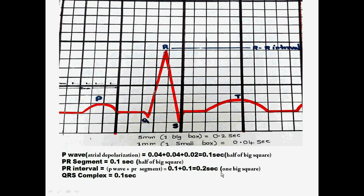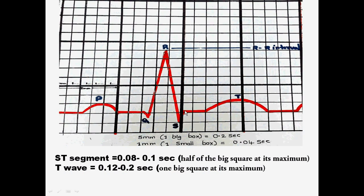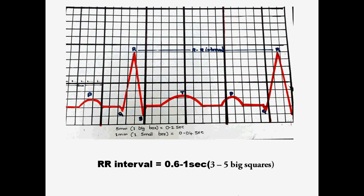Next comes the QRS complex which is again drawn on two and a half small squares. So the duration of QRS complex is 0.1 seconds. Next comes the ST segment which connects the S wave and the T wave, and its normal duration varies from 0.08 seconds to 0.1 second, that is half of the big square at its maximum. Now we have the T wave whose normal duration varies from 0.12 seconds to 0.2 seconds, that is one big square at its maximum. So we have completed everything except the RR interval.